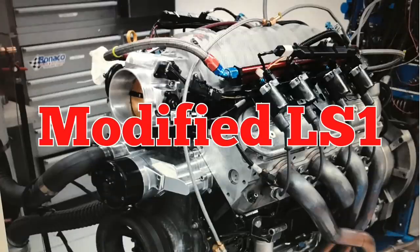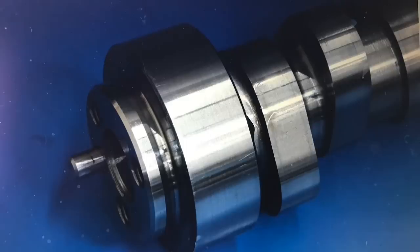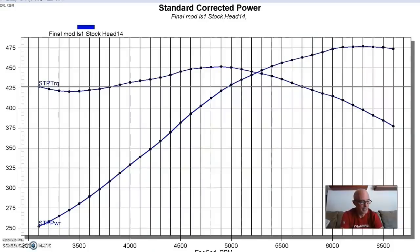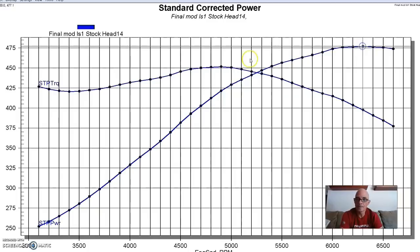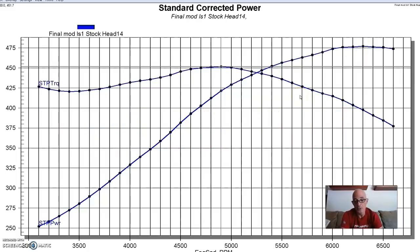Since the LS1 heads flow 238 CFM, obviously there was a lot of power potential left in those. So what we did was put together a modified LS1, basically a cam deal, and this one also had an LS6 intake. That produced 477 horsepower and 451 foot-pounds of torque. If we divide 477 by our 238 CFM, we see that for every CFM, we're making a little over 2 horsepower. We're starting to get up into a good range and really utilize that cylinder head.